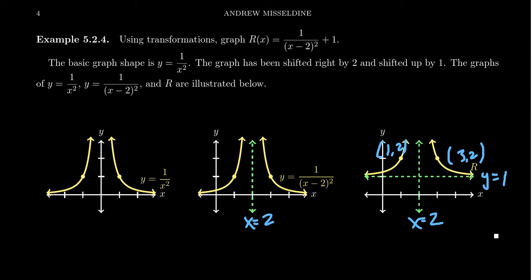Using transformations, we can transform these reciprocal functions, and this is the first step to graphing rational functions. In order to graph more complicated rational functions, we're going to need some more advanced techniques — just as with polynomial graphs, we could graph monomials using transformations, but general polynomials need a little bit more.